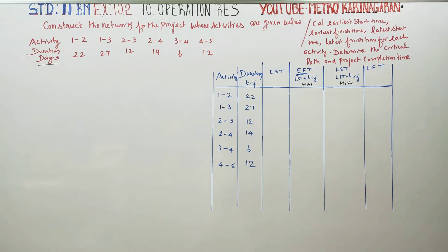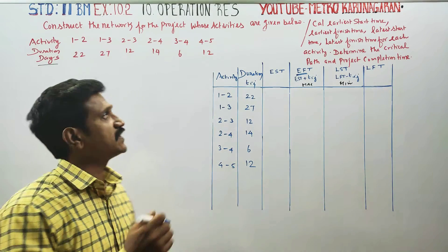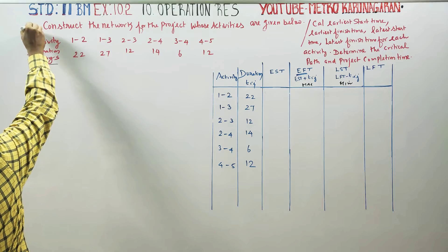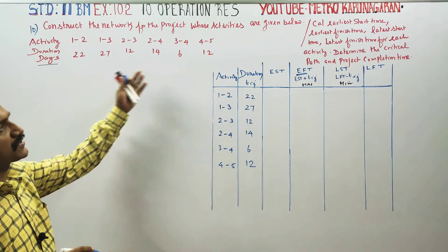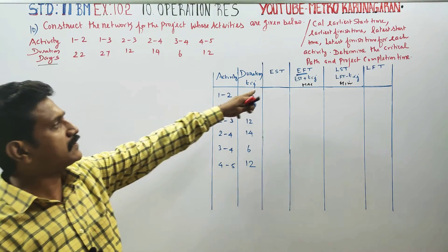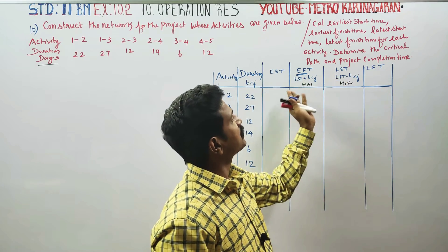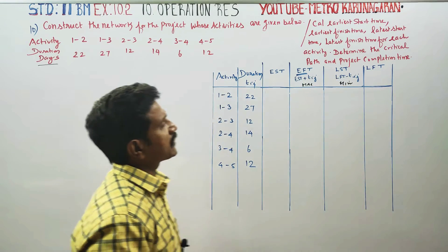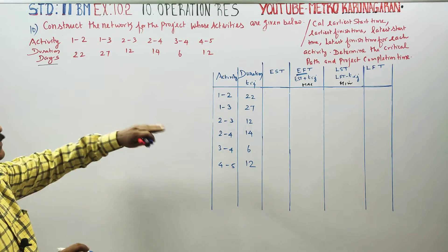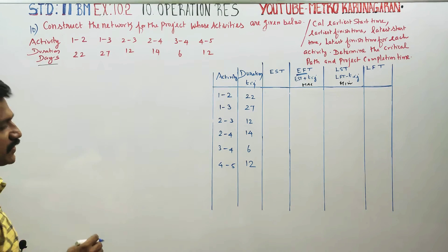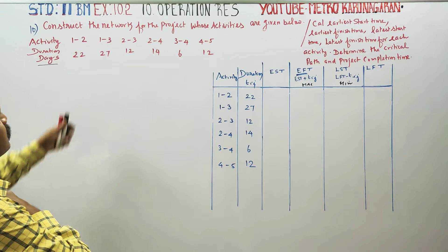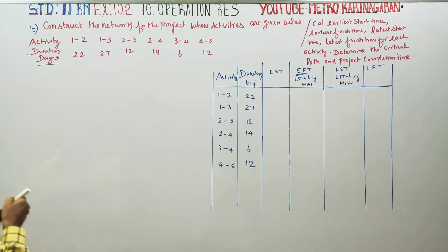Dear 11 Standard Business Maths students, I am Etwa Karanagaran. In exercise number 10.2, sum number 10, the last problem of this exercise, you have to construct a network for the project given and you have to find the earliest and latest finishing time as well as starting times. That is the critical path and the project completion time as well as the next activities.